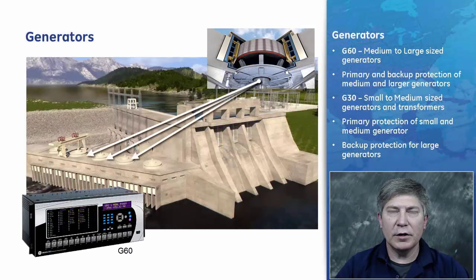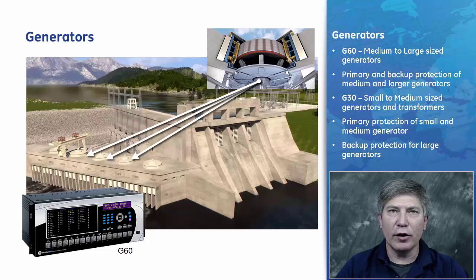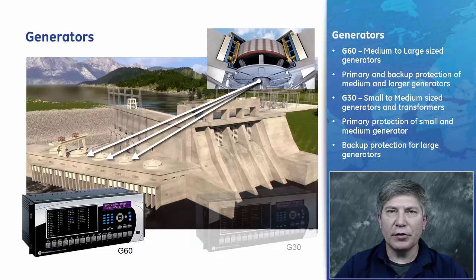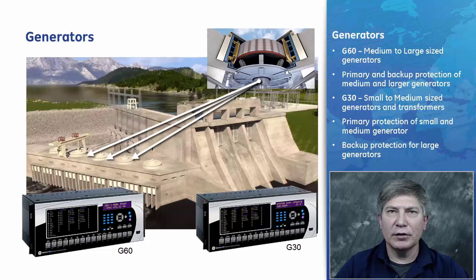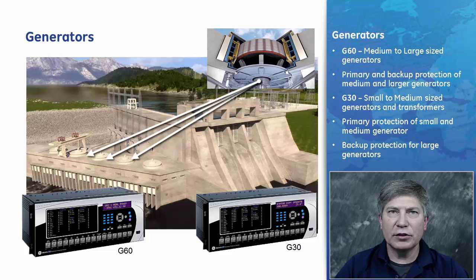Under generators, we have the G60 and G30. The G60 is used on medium and large generators, providing comprehensive primary and backup protection including large steam and combustion turbines, combined cycle generators, and multi-circuit hydro units. It includes advanced automation and communication capabilities, extensive I/O options, and powerful fault recording features. The G30 combines generator and transformer protection and is a flexible system for small and medium generators, generator and step-up transformer arrangements, or backup protection of large generators, also offering comprehensive protection and monitoring elements.